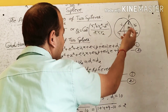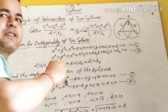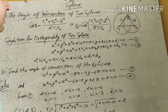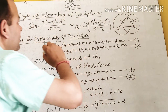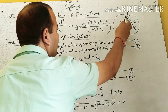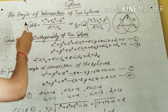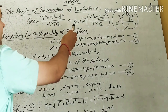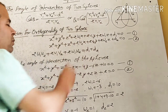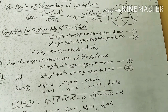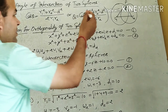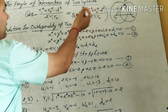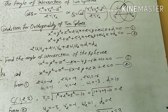Let us suppose 2 spheres are given. The coordinate of center for the 1st sphere is C1 and for the 2nd sphere is C2. Radius of 1st sphere is R1 and radius of 2nd sphere is R2. The angle of intersection of 2 spheres at common point P is theta. The formula is: cos θ = (R1² + R2² − D²) / (2R1R2), or θ = cos⁻¹[(R1² + R2² − D²) / (2R1R2)], where R1 is radius of 1st sphere, R2 is radius of 2nd sphere, and D is the distance between the centers of the 2 spheres.